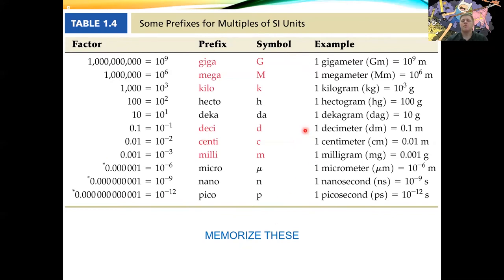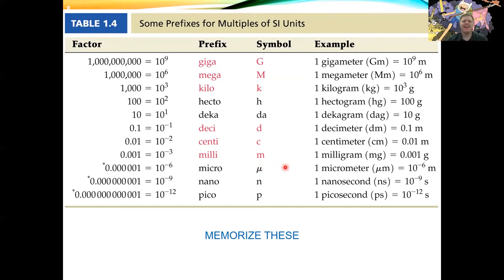Make sure to memorize all these SI prefixes — you can use an acronym like 'the great mighty King Henry died' to help. Above giga there's also tera, as in terabyte. The only unusual one is micro, symbolized by the Greek letter mu rather than a Latin letter.